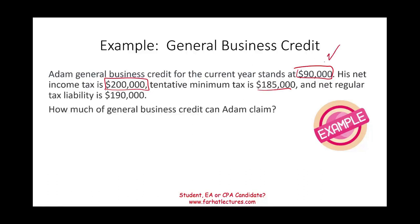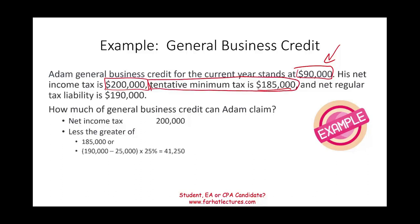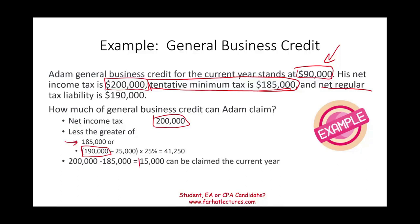How much of the $90,000 can Adam claim? Start with net income tax of $200,000, then deduct the greater of: AMT (tentative minimum tax) of $185,000, or 25% of net regular tax liability over $25,000. The net regular tax liability is $190,000; subtracting $25,000 gives $165,000, multiplied by 25% equals $41,250. The greater of $185,000 and $41,250 is $185,000. So $200,000 minus $185,000 means Adam can claim only $15,000.